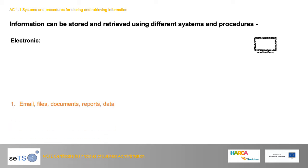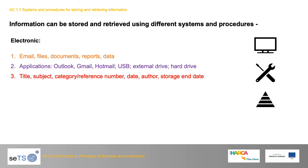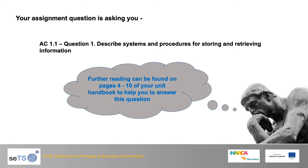For electronic systems — such as emails, files, documents, reports and data — applications such as Outlook, Gmail, Hotmail, USB, external drives, and hard drives are used. Files can be organised with a title, subject, category, reference number, date, author, storage and end date, all found within the file info system. You can share these using systems such as Dropbox, iCloud, or any other cloud-based system. Think about the pros and cons of electronic file-sharing systems for your assignment, and consider problems you may have faced when using these systems.